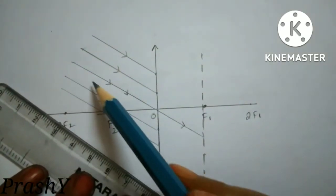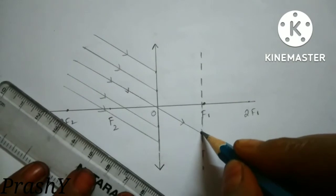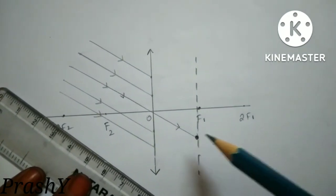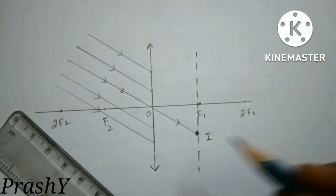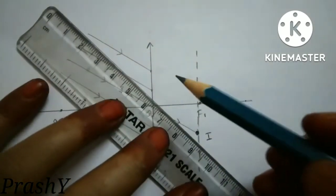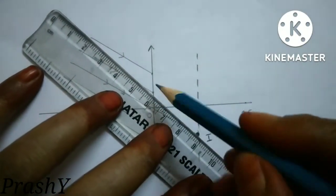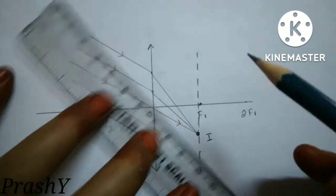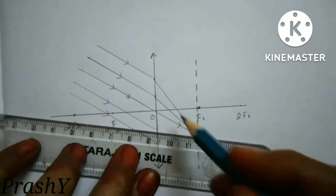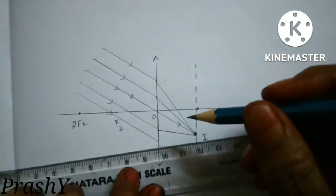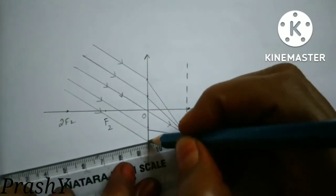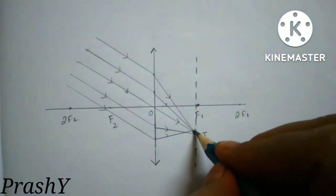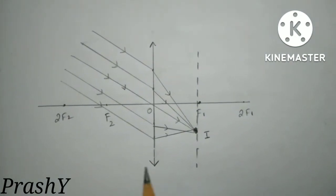The line passing through the optic center meets at a point on the focal plane. I have to join the incident ray to that point on the focal plane — let's call it point I. All the rays will converge at this point. So I draw a straight line joining the point of incidence on the lens to point I. Now your diagram is ready — all the rays are meeting at a point on the focal plane. This is how we draw for a convex lens.